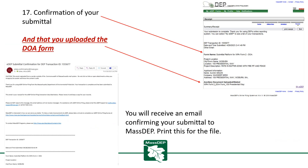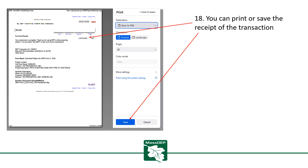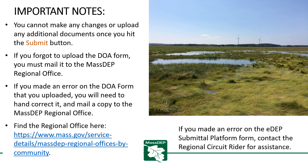Once you hit Submit, EDEP will confirm submittal of the platform. You can also confirm that you uploaded the DOA Form. You will receive an email confirming your submittal to MassDEP — print this for your file. You can also print or save the receipt of the transaction. Important notes: you cannot make any changes or upload additional documents once you hit Submit. If you forgot to upload the DOA Form, you must mail it to the MassDEP Regional Office. If you made an error on the DOA Form that you uploaded, correct it and mail the corrected copy to the MassDEP Regional Office. You can find your Regional Office at the link below.